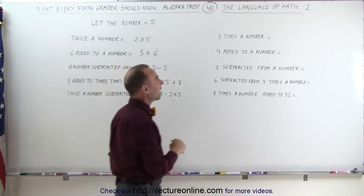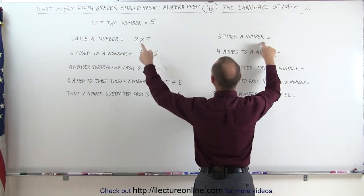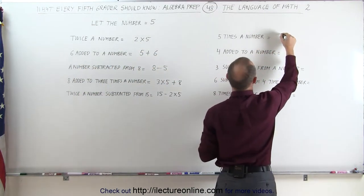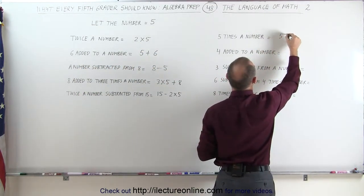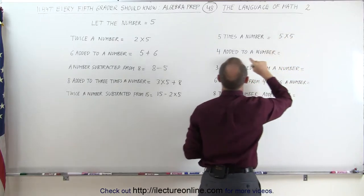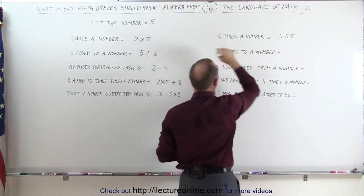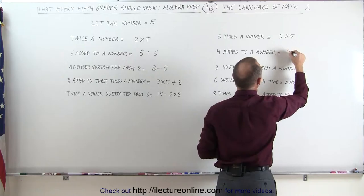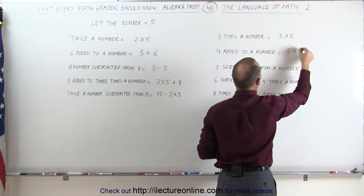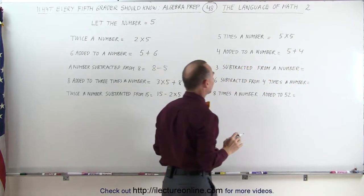5 times the number: if the number is 5, then 5 times that number is 5 times 5. 4 added to the number: the number is 5, and then we add 4 to that. Again, it's in reverse.